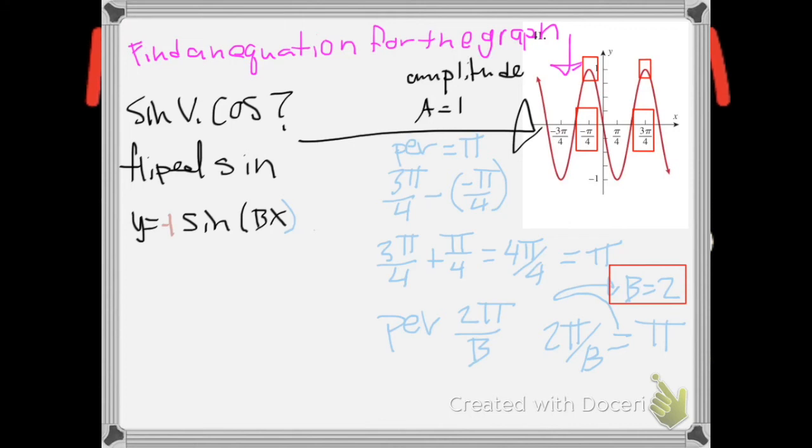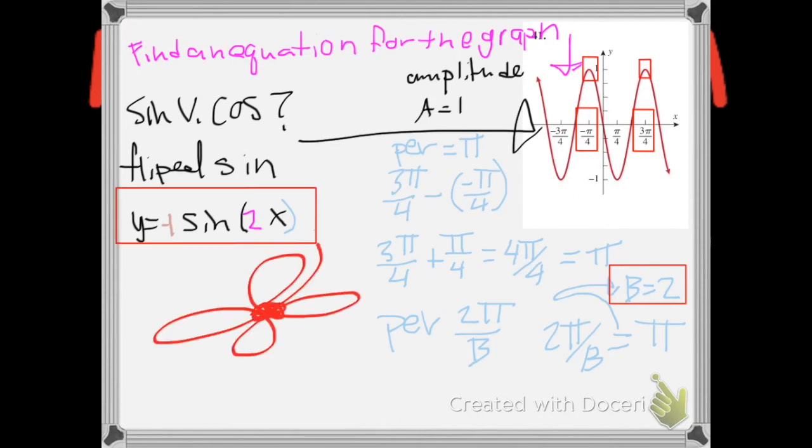And then I'm putting the amplitude in there as minus 1. It's minus 1 because it's flipped. And then I put my B in there too, and I'd be done. Boxing flower.